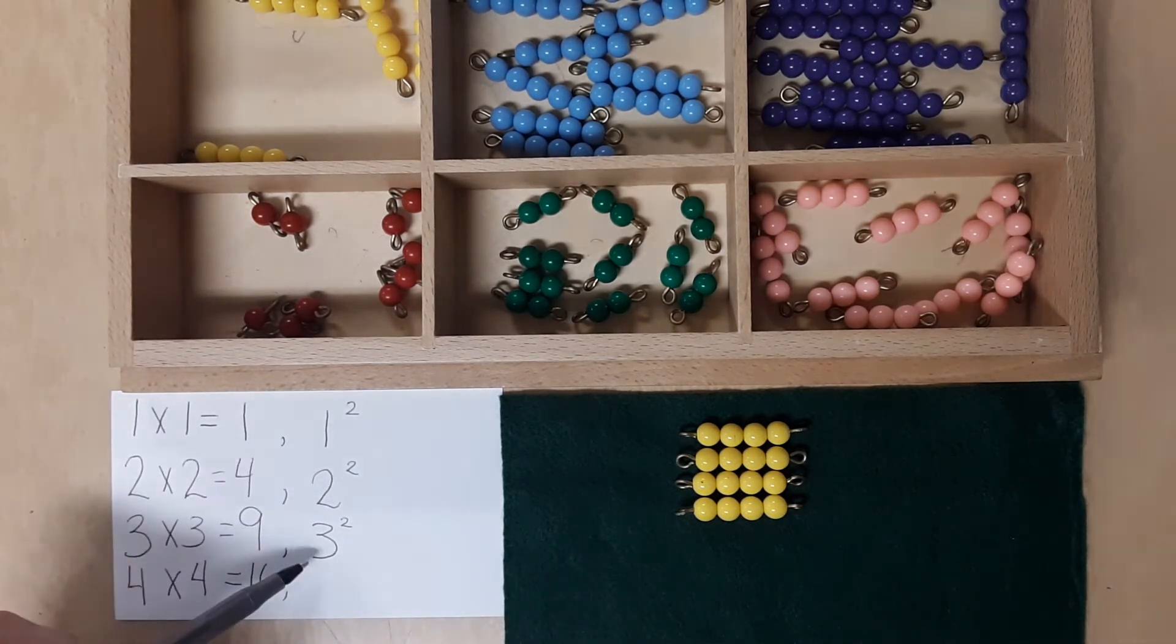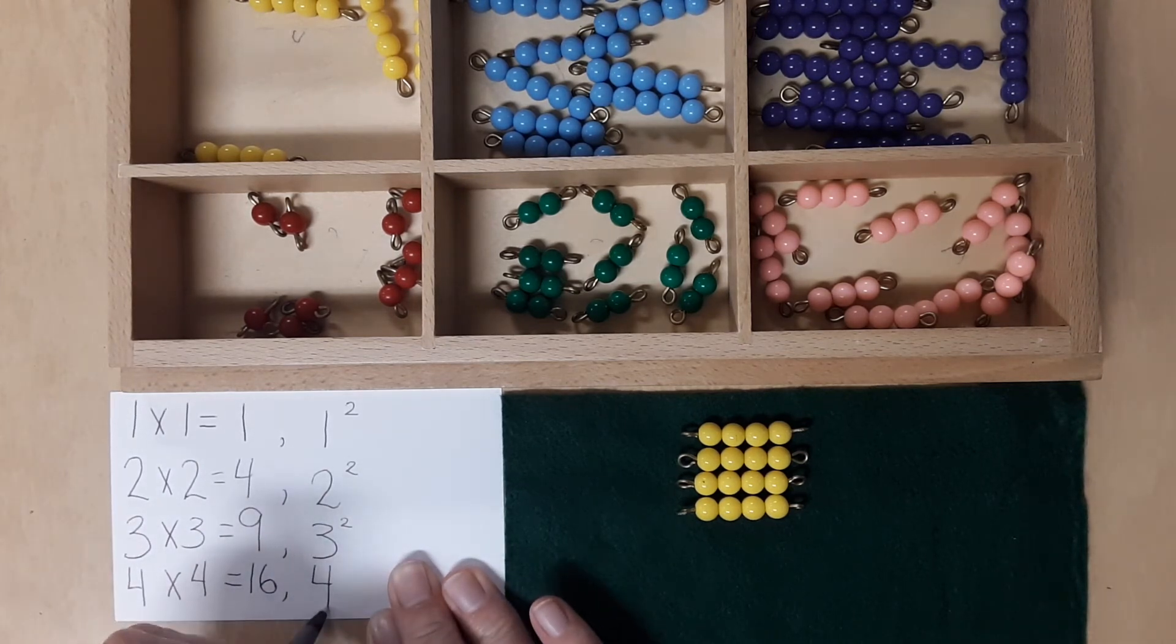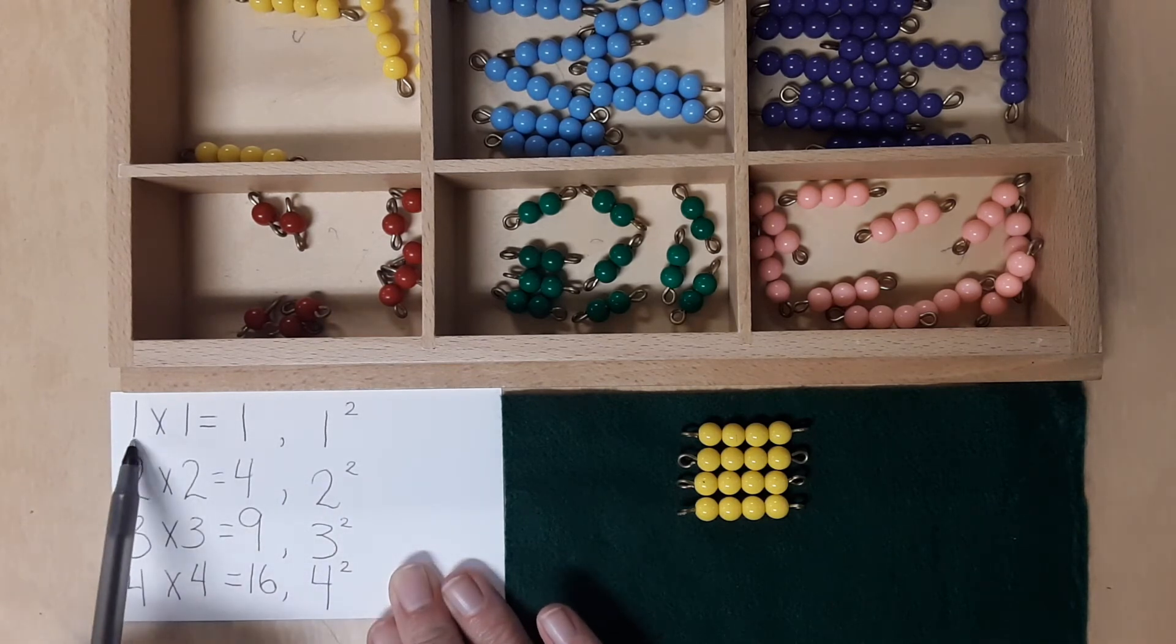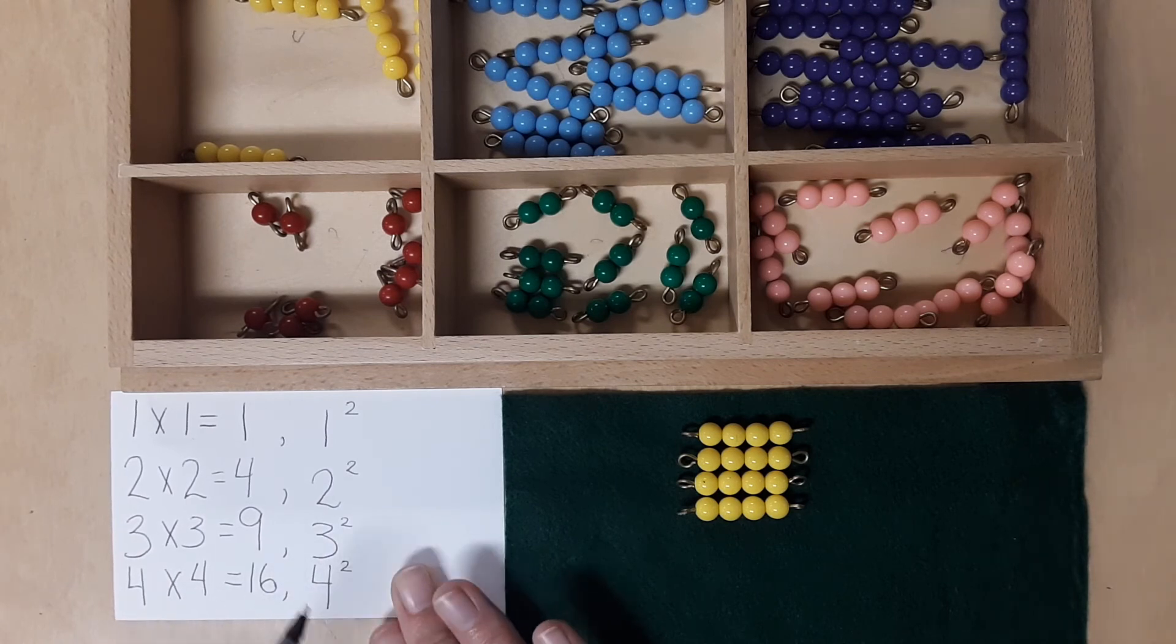And do you see a pattern? How would we write 4 squared? 4. And the little 2 means it's squared. So we have 1 times 1 equals 1 or 1 squared, 2 times 2 equals 4 or 2 squared, 3 times 3 equals 9 or 3 squared, 4 times 4 equals 16 or 4 squared.